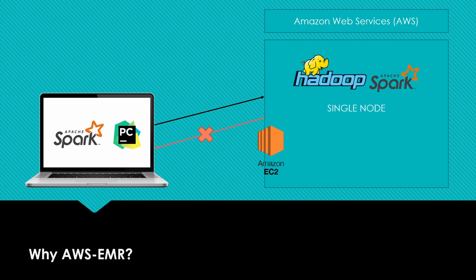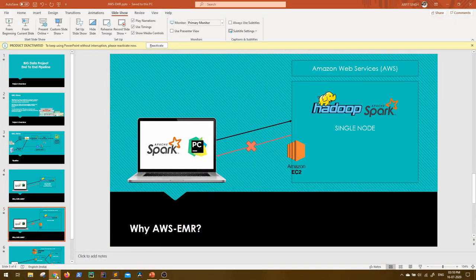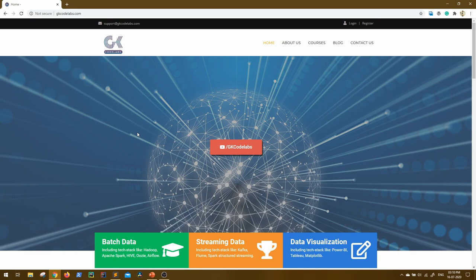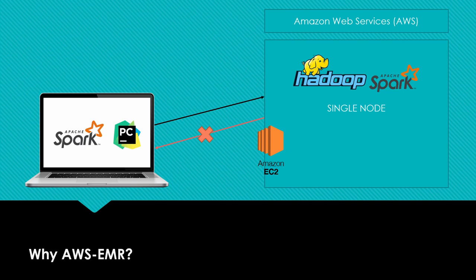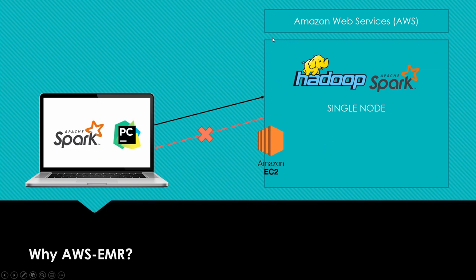Interestingly, our website gkcodelabs.com is actually running on an Amazon EC2 instance. There is an EC2 instance running under my account on which a web server, storage component, and DB are all running, hosting all the website content. So EC2 is not dedicated to big data — you can do whatever you want with that computer. As a part of your interviews at the infrastructure level in big data, you should be aware of EC2, which stands for Elastic Compute Cloud.